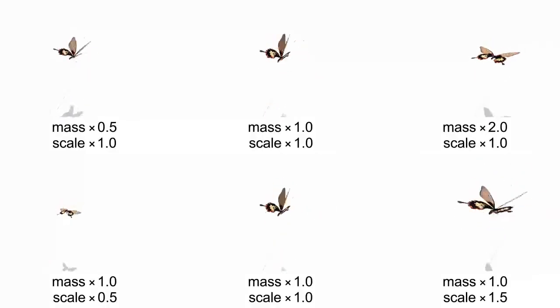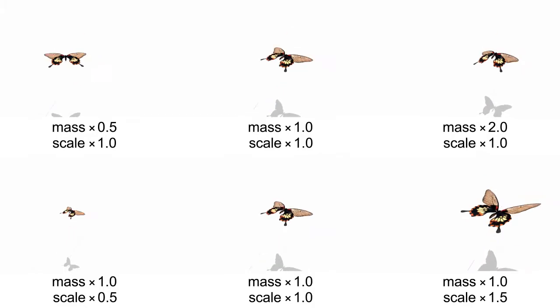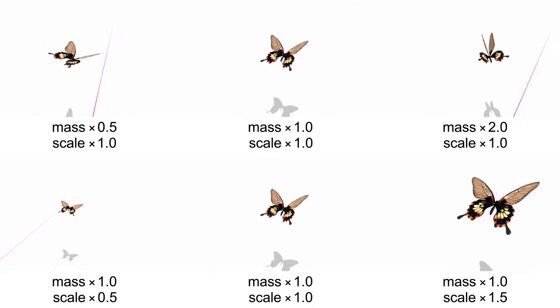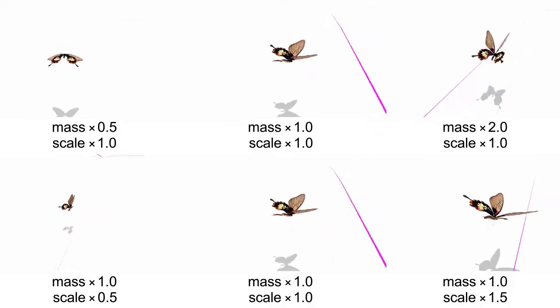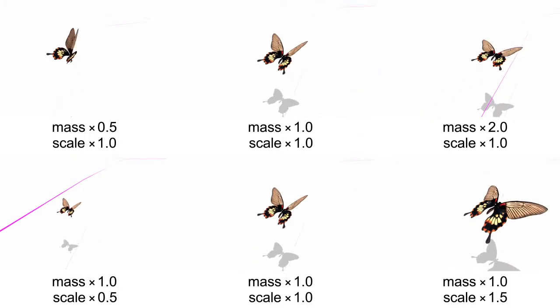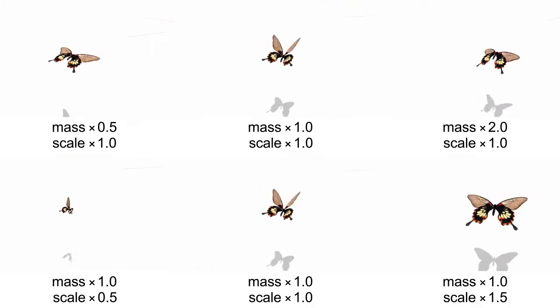A smaller mass makes the butterfly fly higher due to the lift force, and vice versa. The virtual butterfly, which with larger wings, can fly higher and produce more instantaneous vertical oscillations.